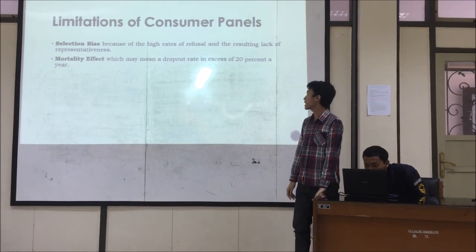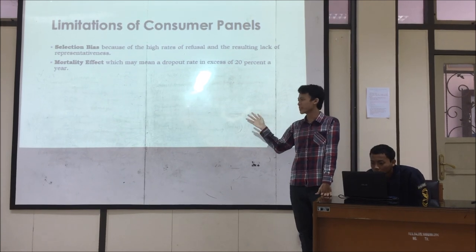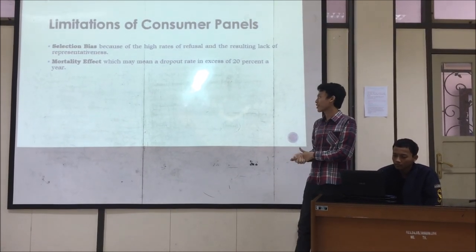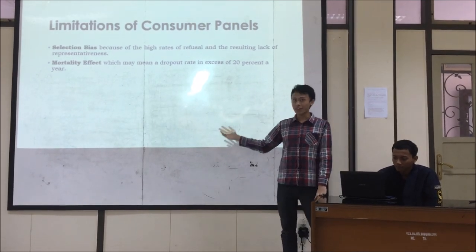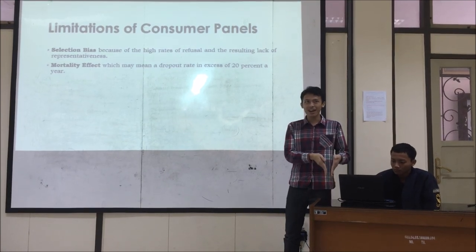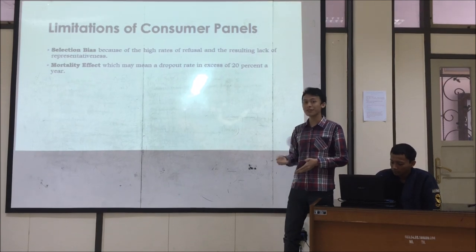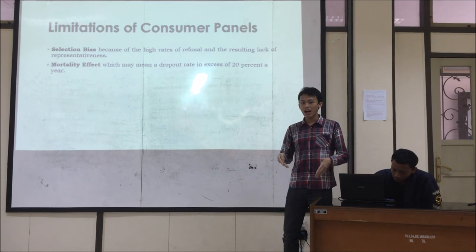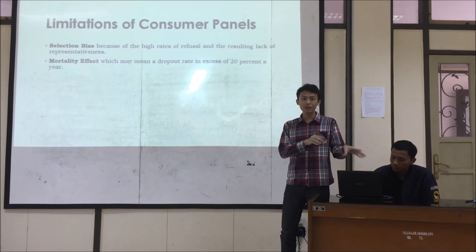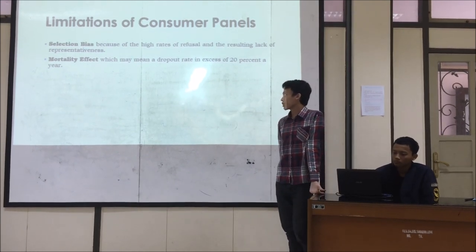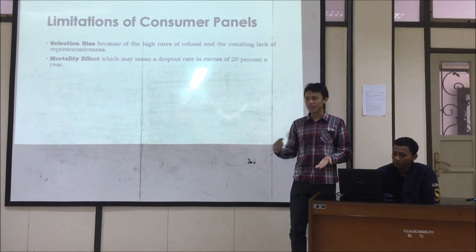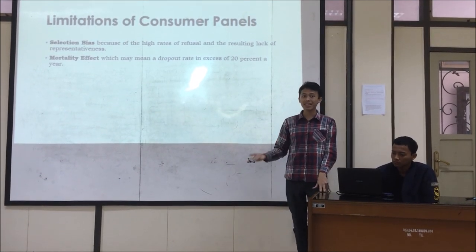The limitations of consumer panels: the first is selection bias. Because the consumer themselves are involved in these consumer panel tools, sometimes consumers will give biased information — meaning they tend to give information based on their own experience, not objectively but subjectively. The second limitation is the mortality effect, which occurs when the consumer cannot give the information, perhaps due to illness or other reasons.